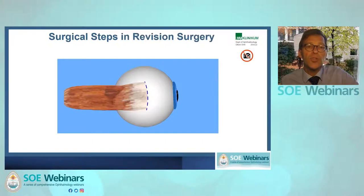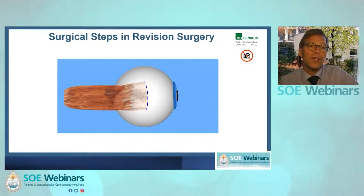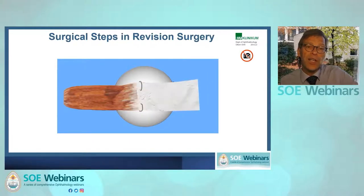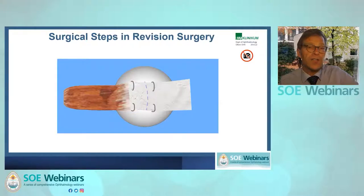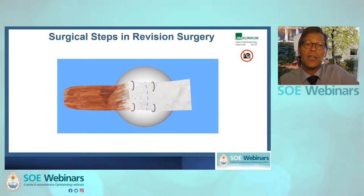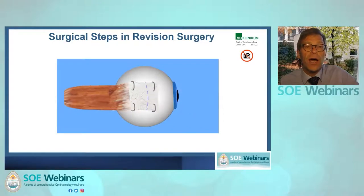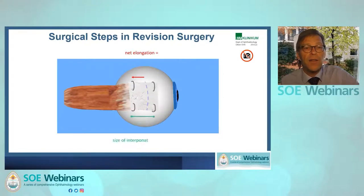Most of the time I use Tutopatch elongation in revision surgery. The muscle is already recessed, often quite far from the limbus. I take the Tutopatch, attach it to the muscle, let it slip back further, and then reattach it a bit anterior to the last insertion to ensure a good arc of contact for the new Tutopatch tendon. The net elongation is calculated by the size of the interponate minus the advancement used.